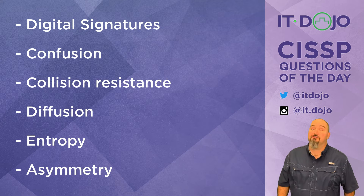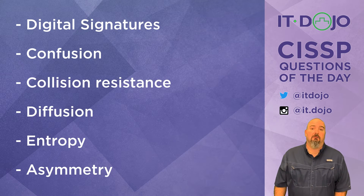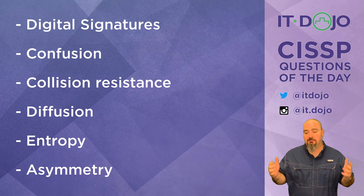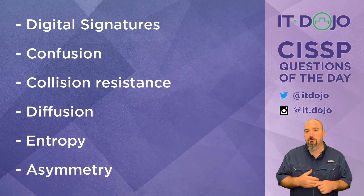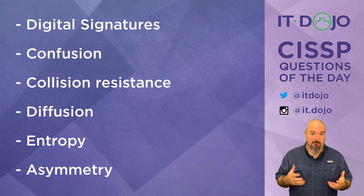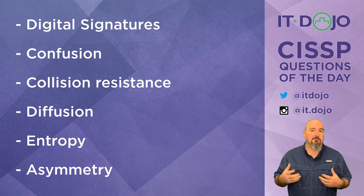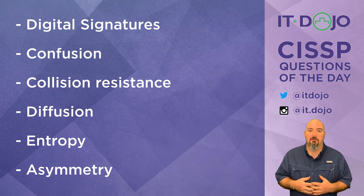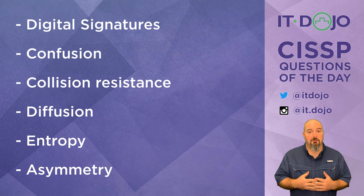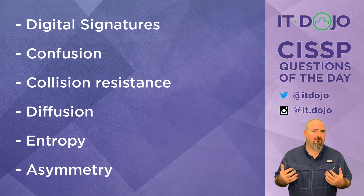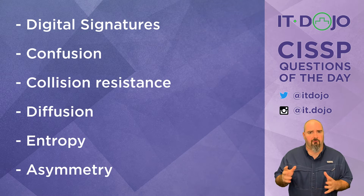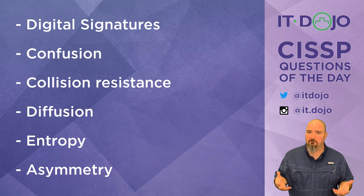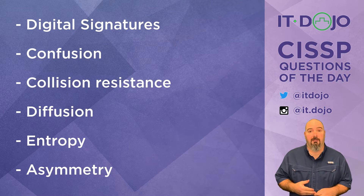Answer choice number one is digital signatures, and that is not the correct answer. A digital signature is going to bring some trust to your hashing, to your integrity mechanism, as well as authentication and non-repudiation if they're from a trusted source. None of those things have anything to do with making stuff secret. That's all about origin authentication, non-repudiation, and integrity, whereas stream ciphers are all about confidentiality. Definitely not our right answer here.